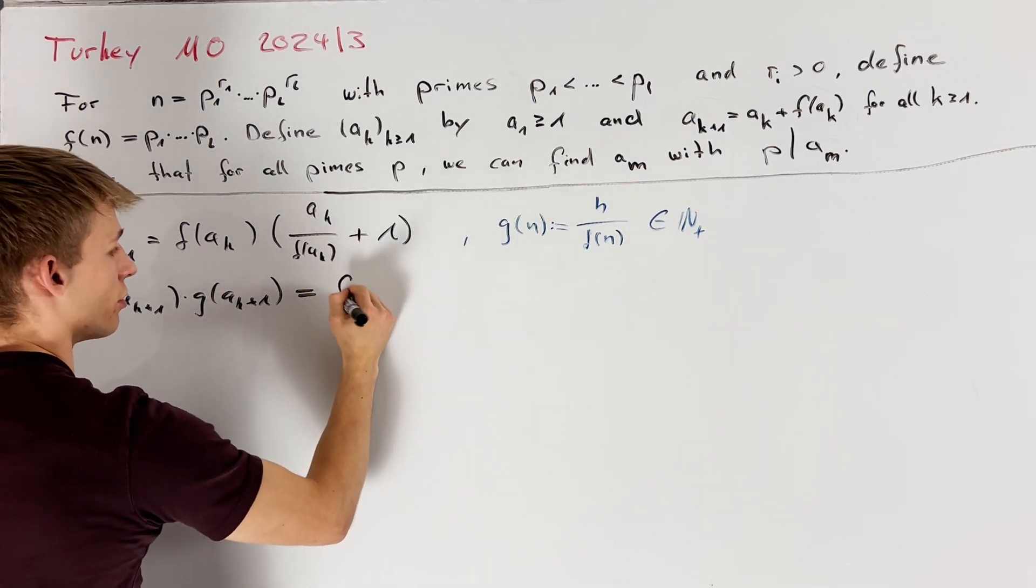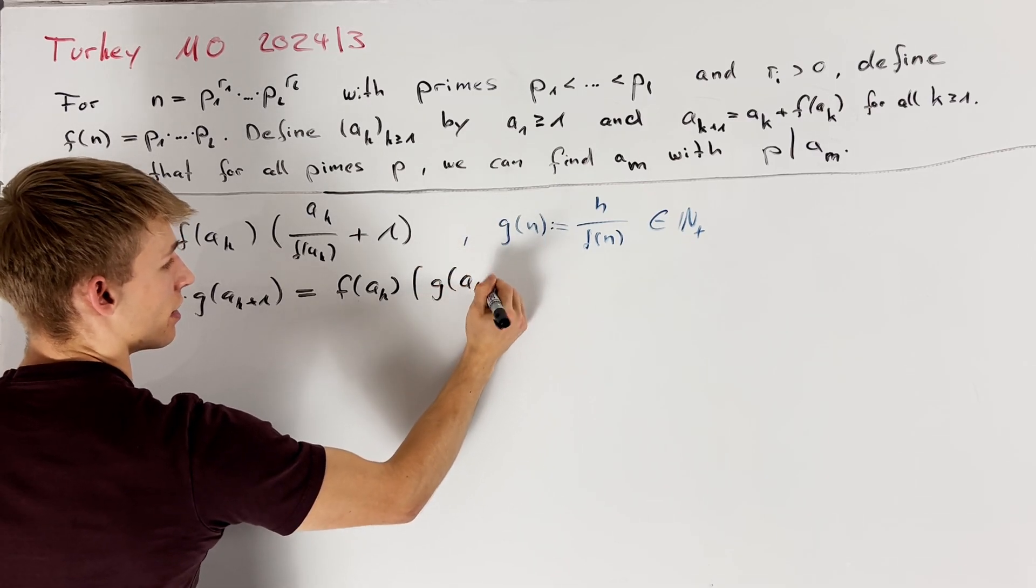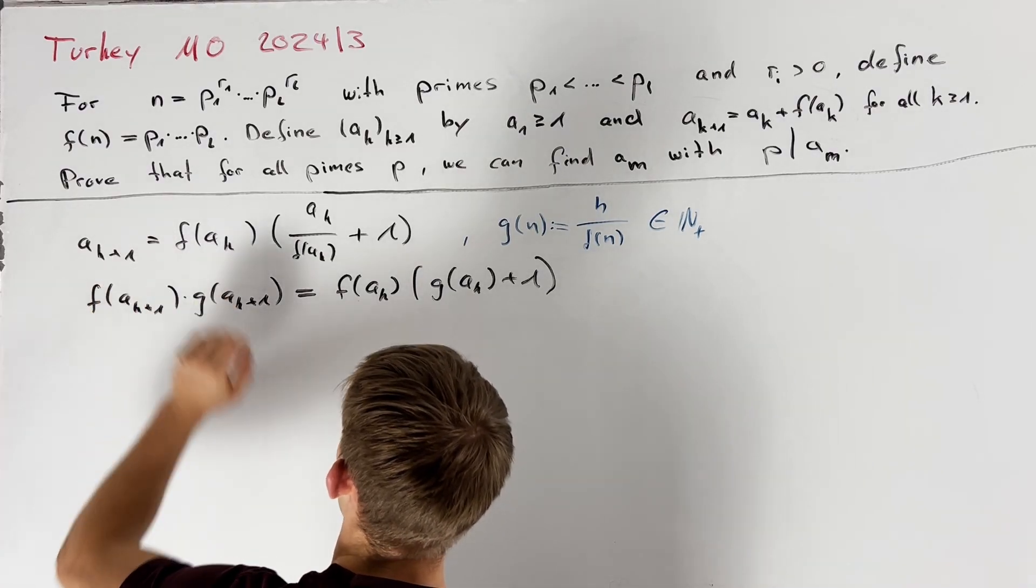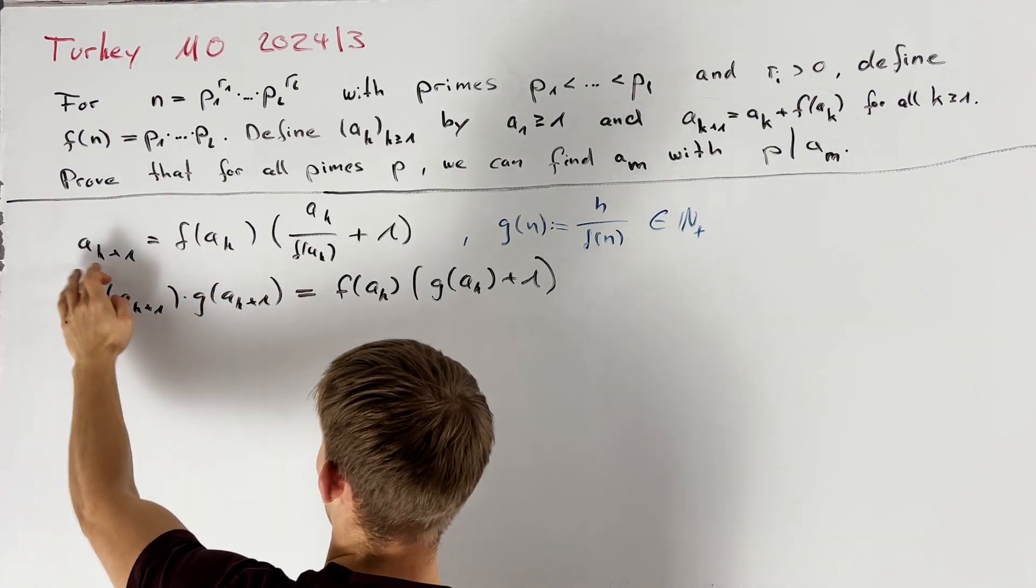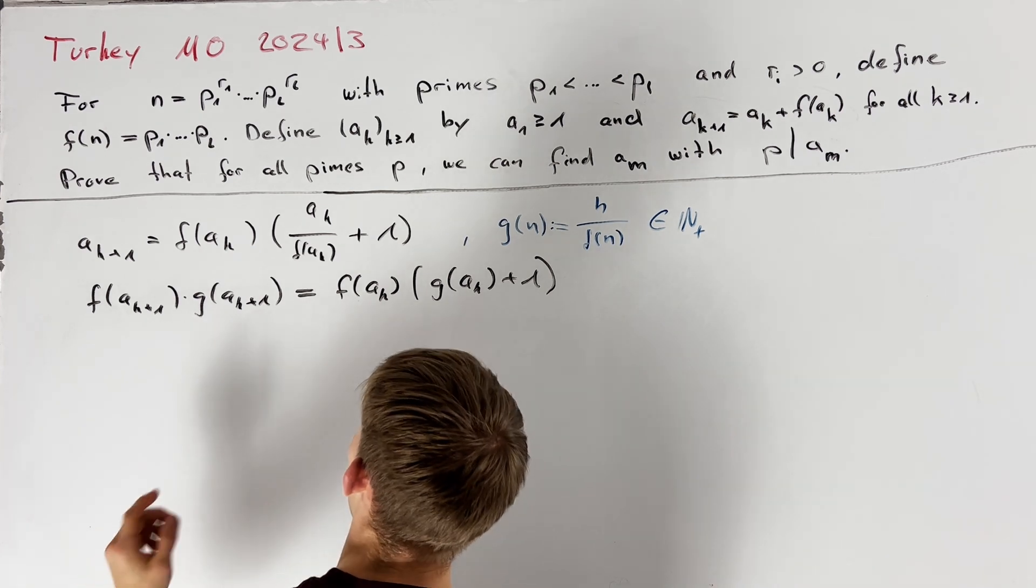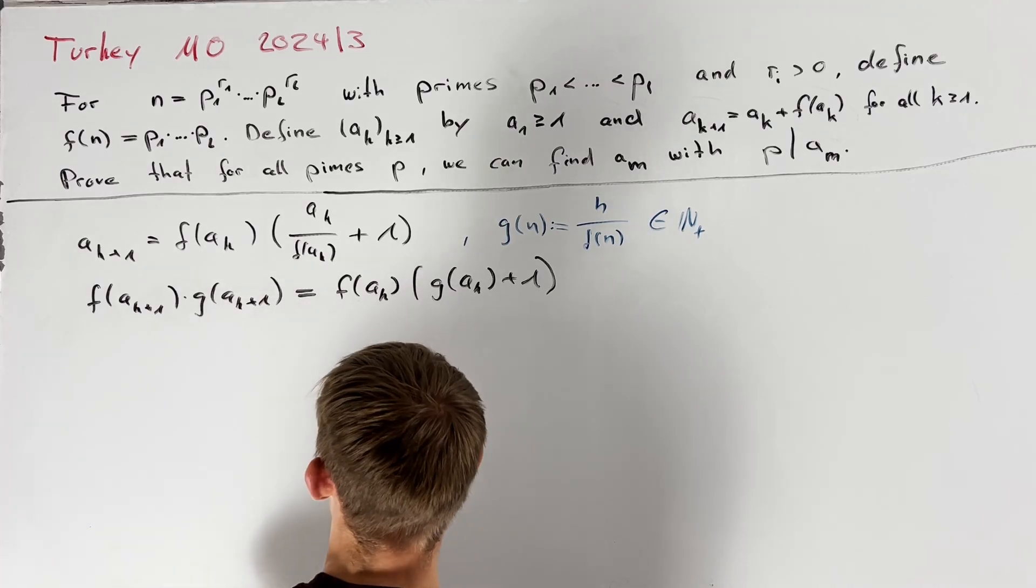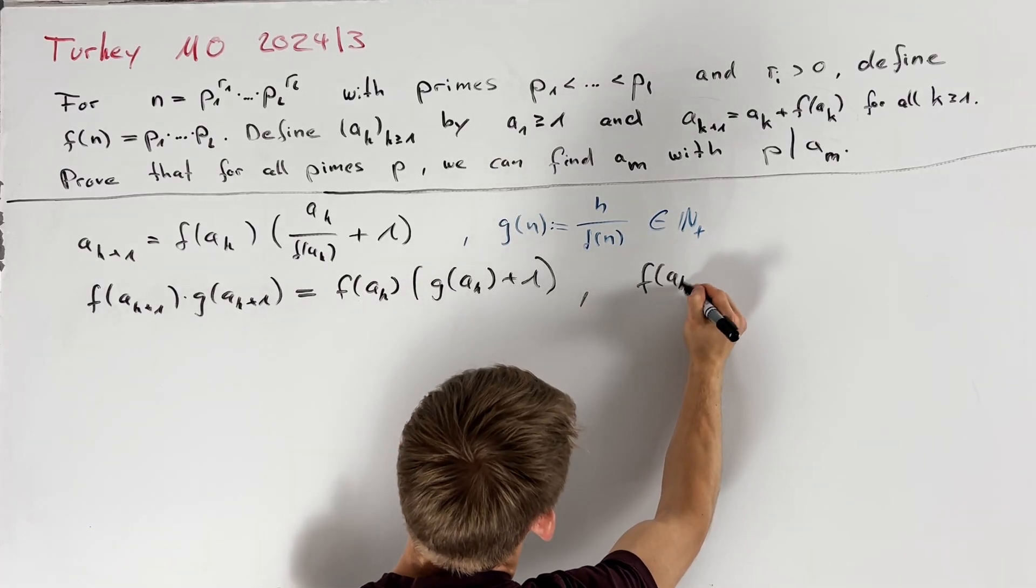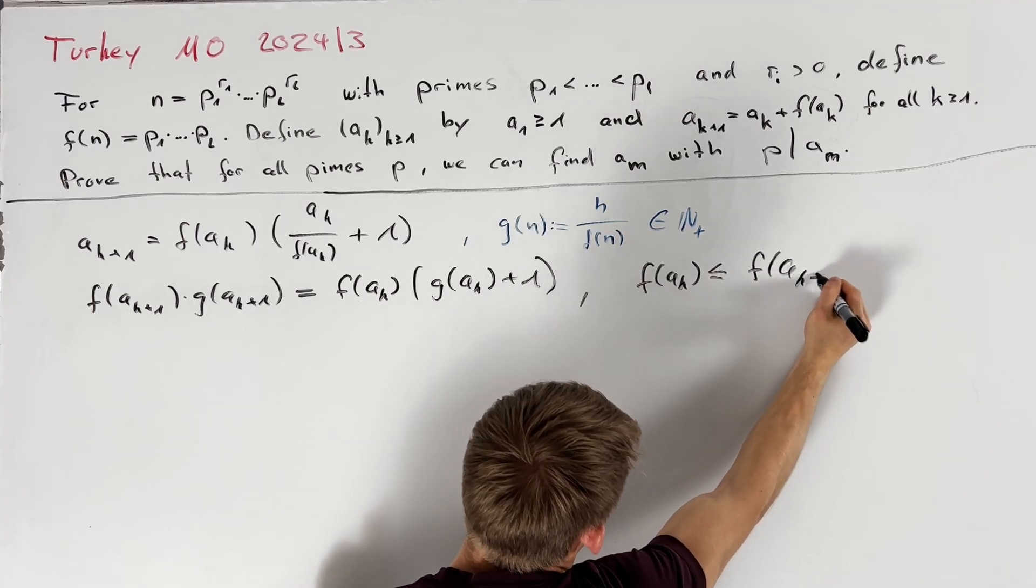And on the right hand side we have that this is equal to f of a_k times g of a_k plus 1. From our recursive formula we directly get that f of a_k is a divisor of a_{k+1} and therefore all prime divisors of a_k are also prime divisors of a_{k+1}. In other words we know that f of a_k is less than or equal to f of a_{k+1}.